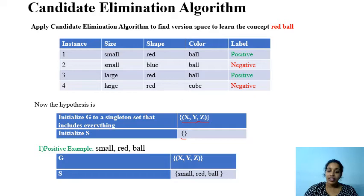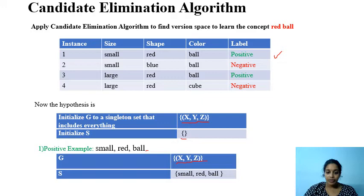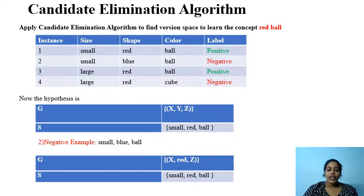On seeing the first example — a positive instance 'small red ball' — we check whether it can be accepted by both G and S. G with (x, y, z) can accept it since x, y, z are variables that accept any value. S with the null set cannot accept it, so according to the algorithm, we modify S to 'small red ball'. The current hypothesis is now (x, y, z) and (small, red, ball).